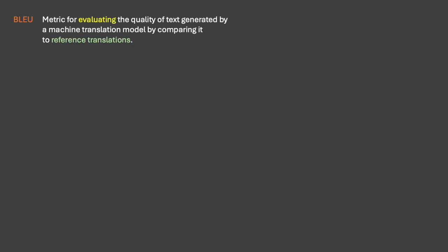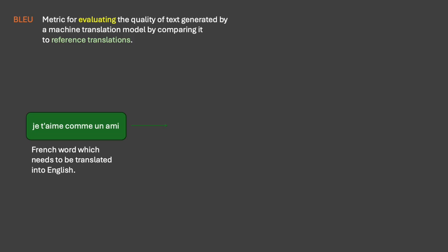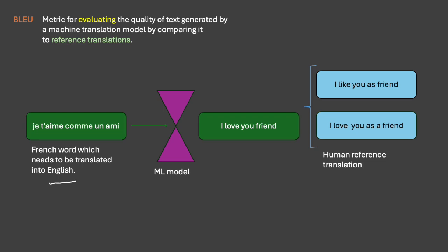Suppose I have a text in French and this text needs to be translated into English. The idea is that I have this French text and I want to create a machine learning model which translates this French text to English. The ML model takes this French text and gives us an English translation — 'I love you.' And how do we compare how effective this translation is? We have some human reference translation here.